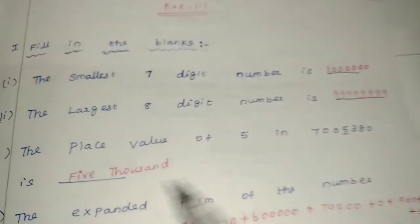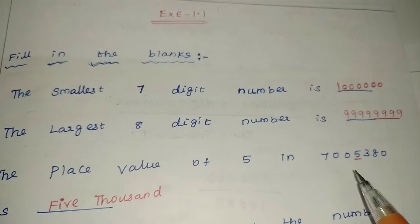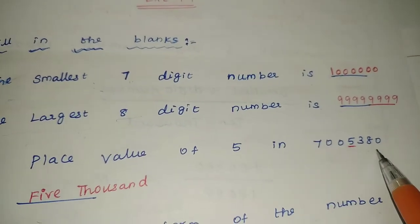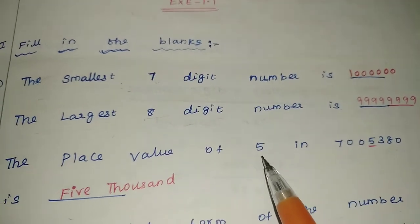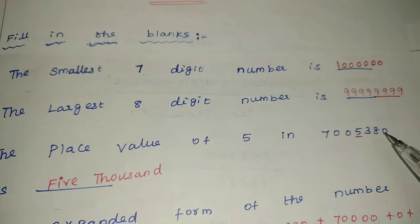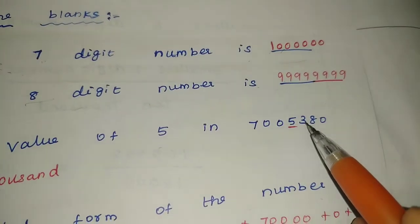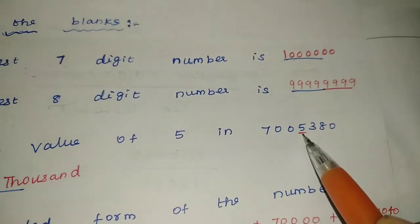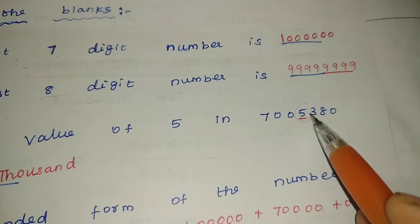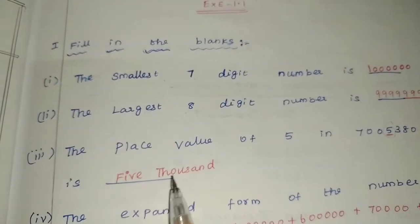Next: the place value of 5 in this number — dash. Here are the values. In the numbers, we find the place value of 5. Going through ones, tens, hundreds, thousands — you can give the value. The number 5 is in the thousands place, so the place value of 5 is 5,000.